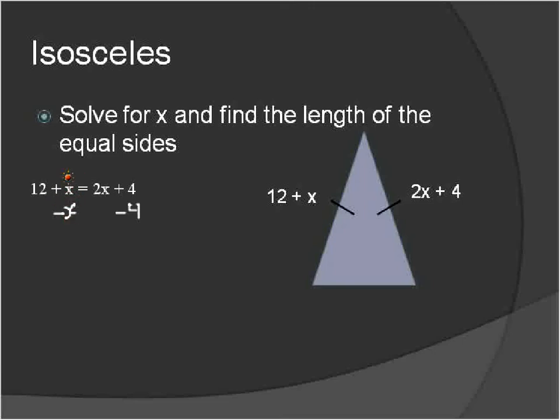So to solve, I'm going to subtract x from both sides of the equal sign. That will cancel out x here. I'm going to subtract 4 from both sides, and that will cancel it out there. 2x minus x will give me x. 12 minus 4 gives me 8. So I know that 8 is equal to x.